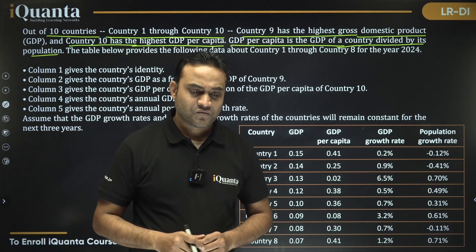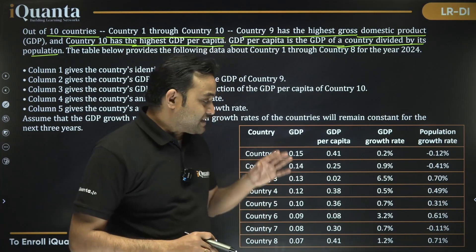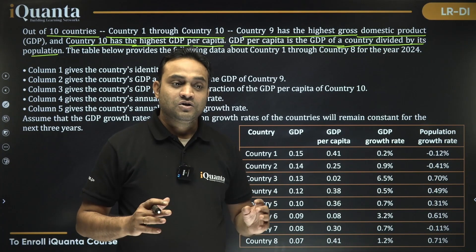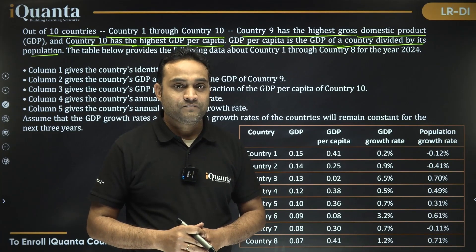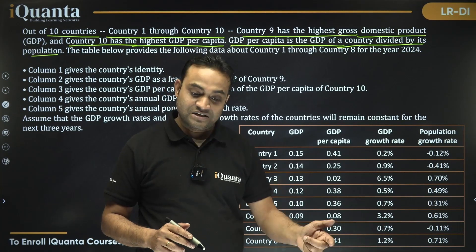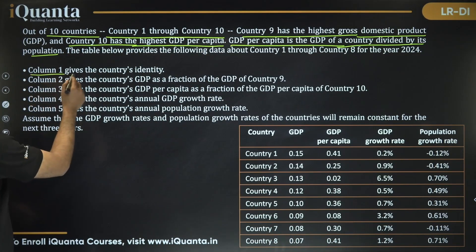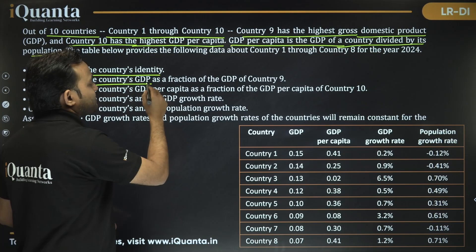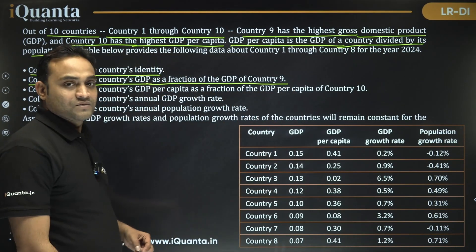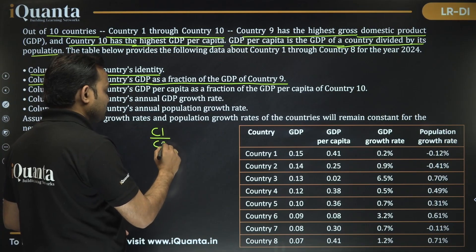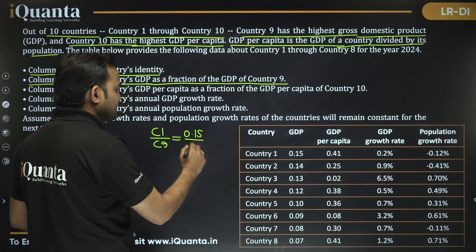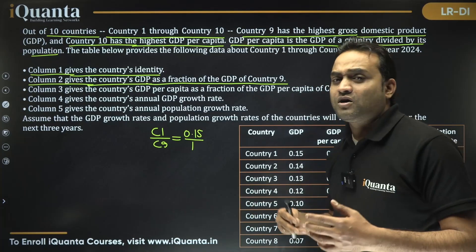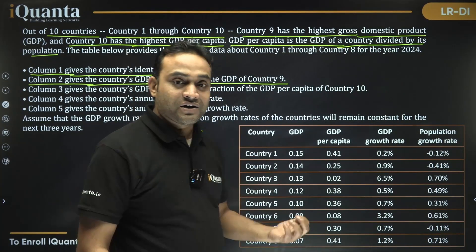It seems strange — country 9 and country 10 are mentioned, but the table only covers countries 1 through 8. Don't worry about that until you've read the whole question. Column 1 gives the country's identity (1 through 8). Column 2 gives the country's GDP as a fraction of the GDP of country 9 — meaning GDP of country 1 divided by GDP of country 9 equals 0.15. You can assume the GDP of country 9 as x, 100, or 1 — anything works.